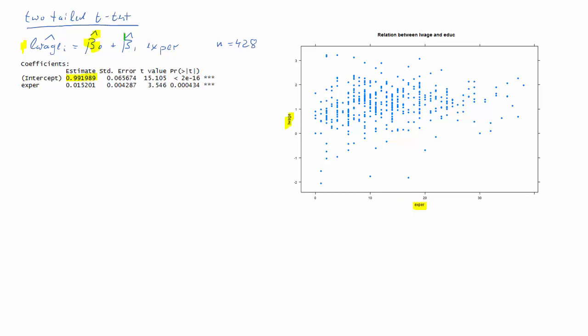And we found this intercept and we found this slope coefficient. Here we have the standard errors and next to that t-value columns and a p-value column. Now let's test the following null hypothesis. So let's start considering this. Let's test the hypothesis that beta 1 is equal to